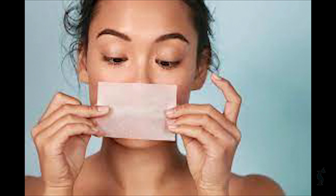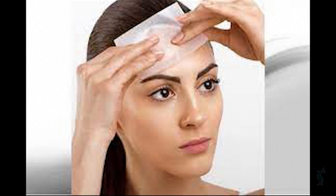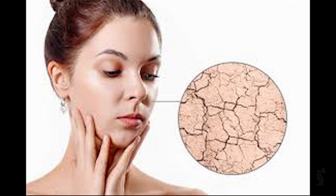The Blotting Sheet Approach: Pat your face with a sheet of blotting paper and hold it in front of a strong light. You probably have dry skin if you have little to no oil. Your skin type is normal if the sheet absorbs some oil from the T-zone. If it gathers oil from every area of your face, you probably have oily skin.